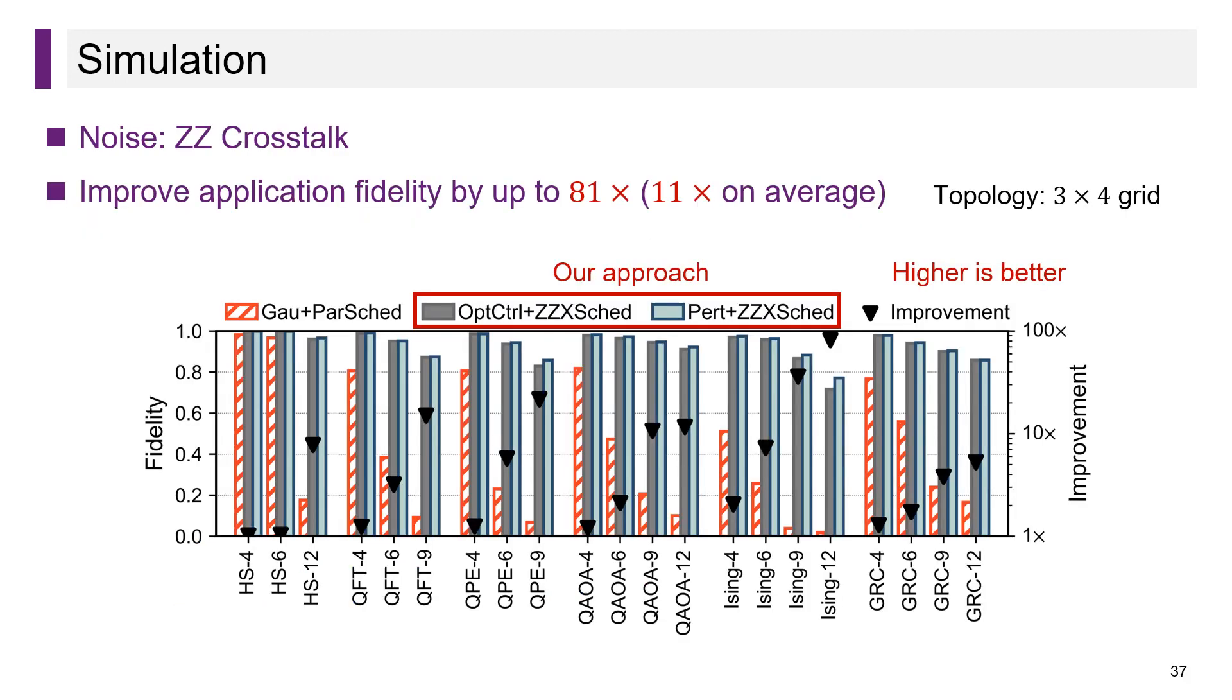We first tested our approach with ZZ crosstalk as the only noise source. The x-axis shows different applications, each with 4 to 12 qubits. The bar chart shows application fidelity, and triangles show the improvement of our approach over the baseline. Higher is better. It is shown that our approach can largely improve application fidelity by up to 81 times.